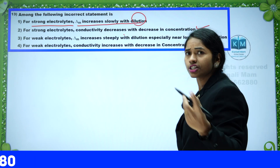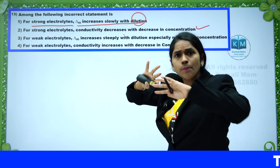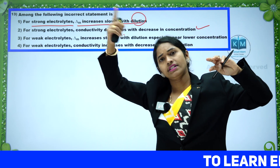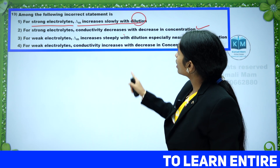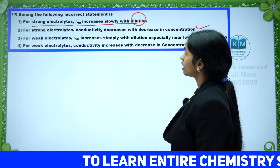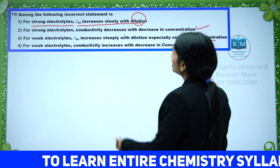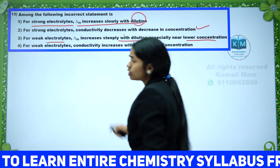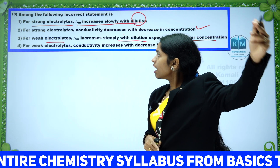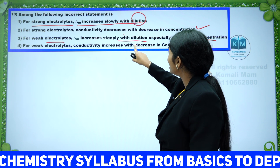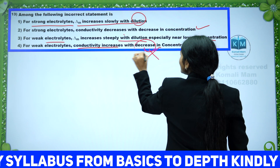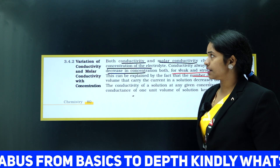If you decrease concentration, conductivity decreases. Adding more water causes ions to split more, so more dilution means more conductivity. For weak electrolytes, molar conductivity increases steeply with dilution, especially near lower concentration. This is what Oswald's Law explains. So option four — stating that conductivity increases with a decrease in concentration for weak electrolytes — is the incorrect statement, because conductivity increases with increase in concentration.